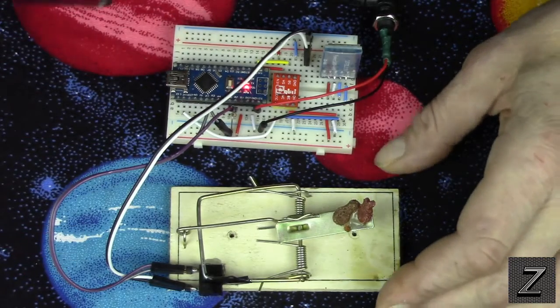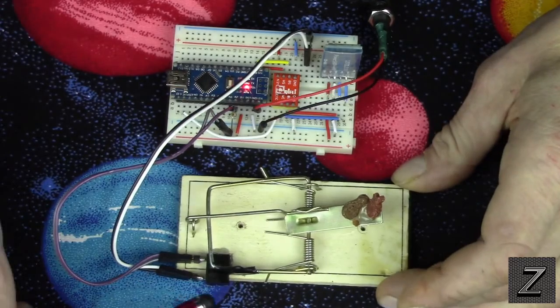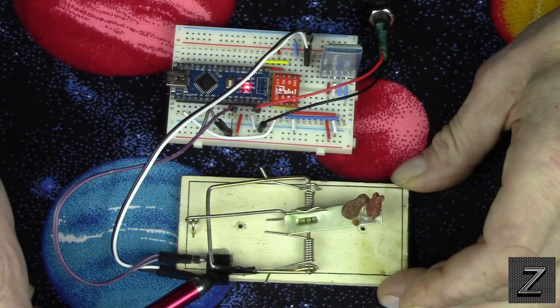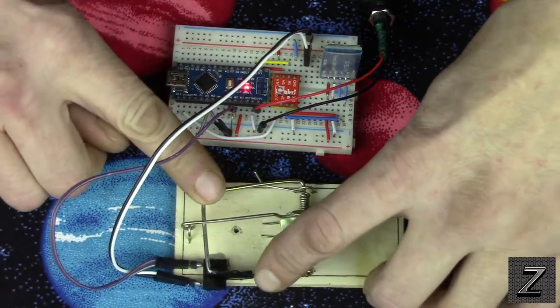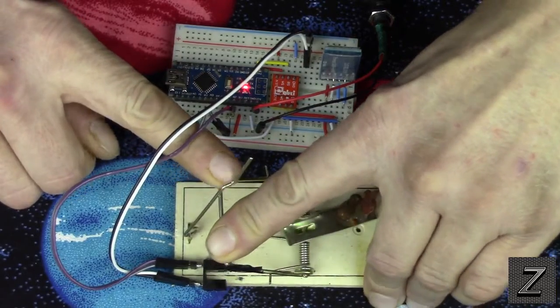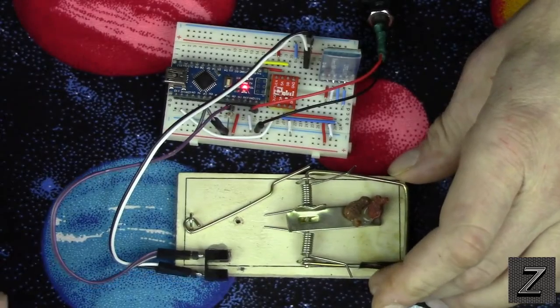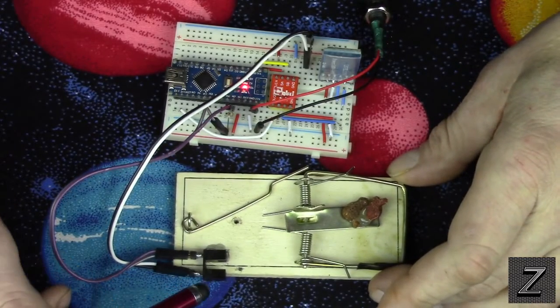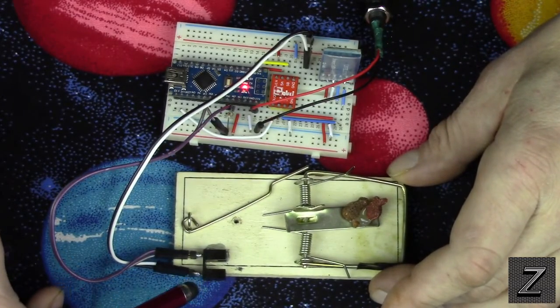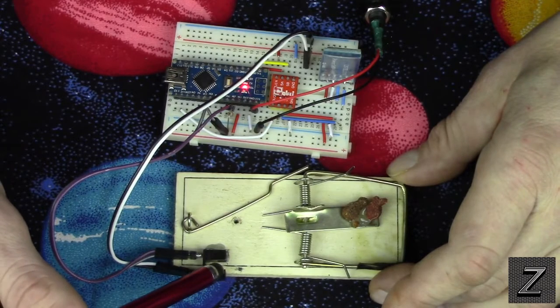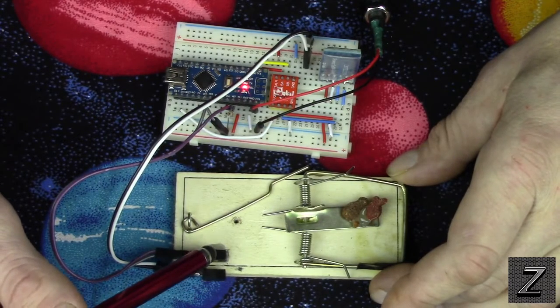And then the only other component we really have is the photo interrupter. That's what's down here on the trap. Open the trap. That's the photo interrupter right there. And what that is is there is an infrared LED on one side and an infrared transistor on the other.